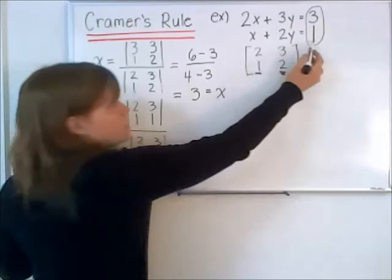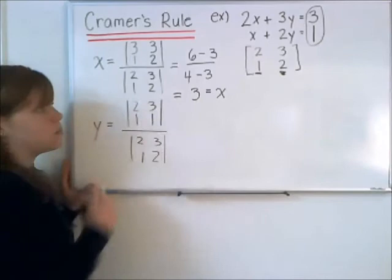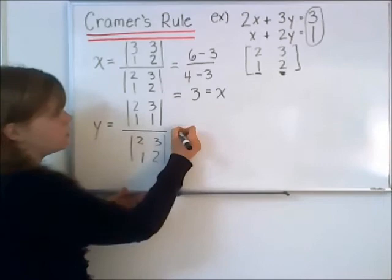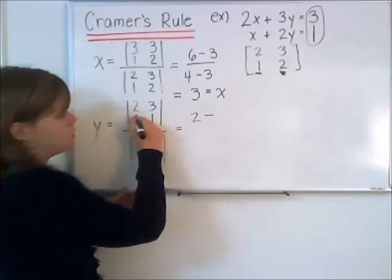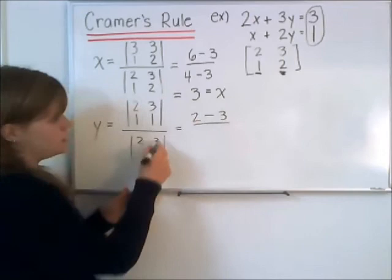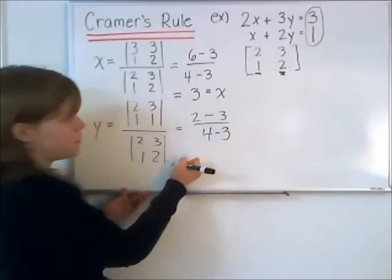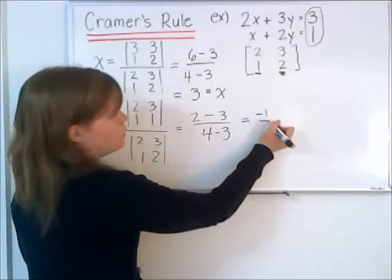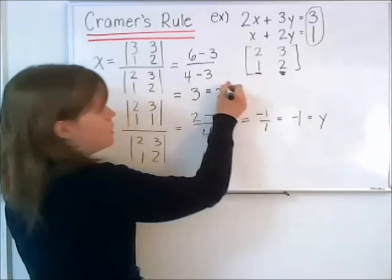This column from the right side is replacing the column representing the variable we're trying to find. Once we do this, we calculate these determinants. On top, we get 2 times 1 is 2, minus 3 times 1 is 3. This determinant is the same as before. Doing the final calculation, we get negative 1 over 1, which equals negative 1. That represents our y value.